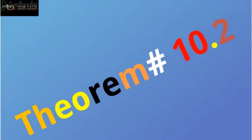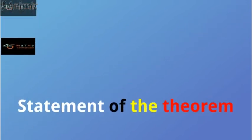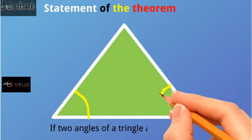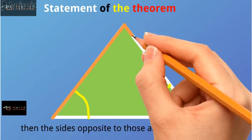Theorem 10.2: Statement of the theorem. If two angles of a triangle are congruent, then the sides opposite to those angles are also congruent.